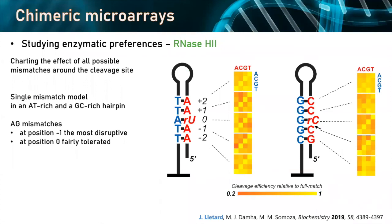Then we studied mismatches to understand which positions and types of mismatches affect cleavage efficiency. The color coding here shows that the redder the color, the worse the cleavage efficiency caused by introducing that particular mismatch. We took two hairpin models and did all possible mismatches at those positions, then mapped the entire thing. We can clearly see that at position minus one and position zero — where the cleavage takes place — the presence of a mismatch is the most detrimental to cleavage efficiency. Especially an A-G mismatch at position minus one reduces cleavage efficiency by about 80%.